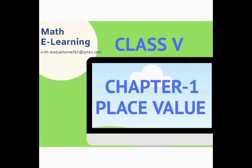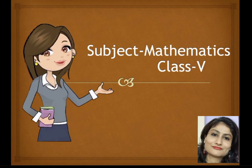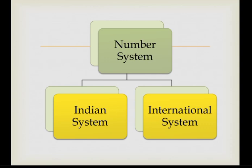Welcome to my study channel Math E-Learning. Today we will learn Class 5 Chapter 1 place value. Today I am going to explain about Class 5 Chapter 1 place value. As we know there are two types of number systems: one is the Indian system and the second is the international system. You can represent a number in two ways — Indian and international. In this video we will look at the Indian system only.